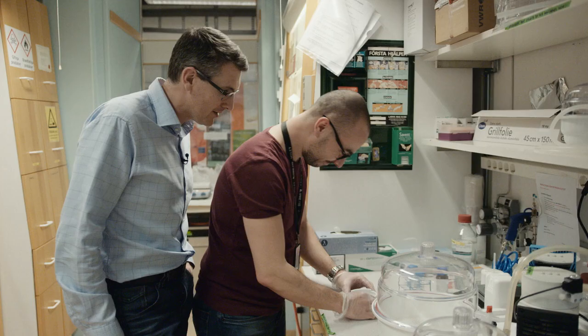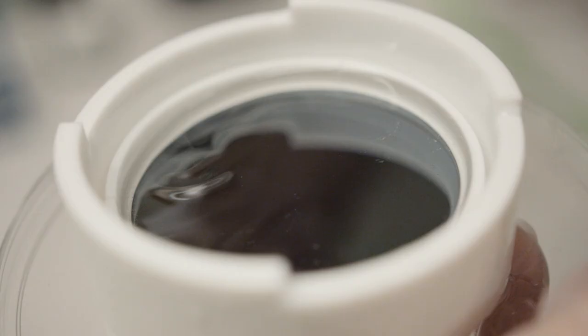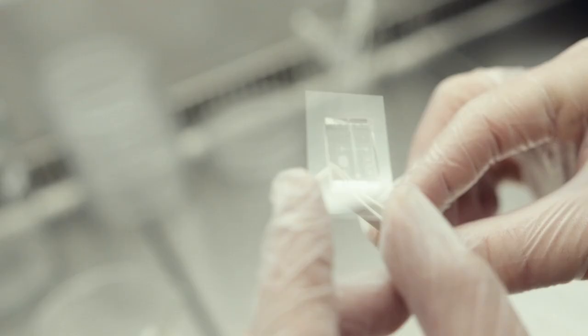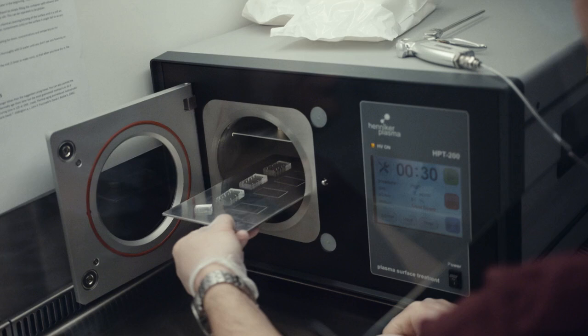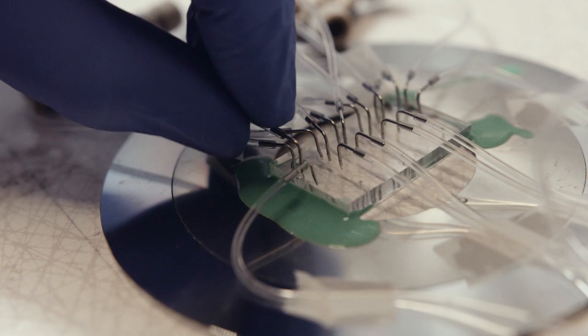The researchers first create a mold and design the tiny channels they need. This is a large mold with 1500 nanometer gaps. In the mold, they can then cast the chip in plastic. The chip will be bound to a small glass slide. First, the surfaces are treated in a plasma oven. Then, small holes are made through which the cells can be inserted, as well as the liquid they will grow in.